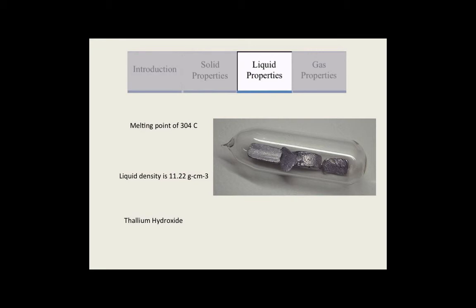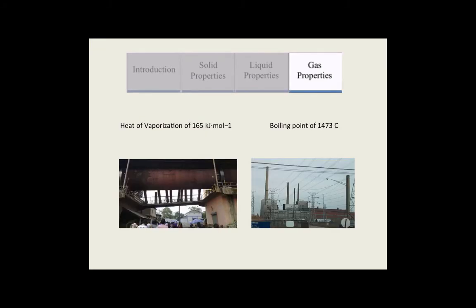Thallium has a melting point of 304 degrees Celsius, and its liquid density is 11.22 grams per cubic centimeter. Thallium has a boiling point of 1,473 degrees Celsius, and a heat of vaporization of 165 kilojoules per mole.